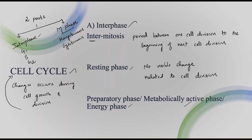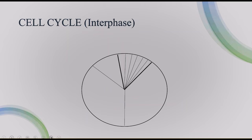Biosynthetic activities mean there will be the synthesis of macromolecules and other cell constituents required for cell division. In the cell cycle, the interphase starts and goes up to the M phase. This is the interphase or I-phase, and here it is the M phase.